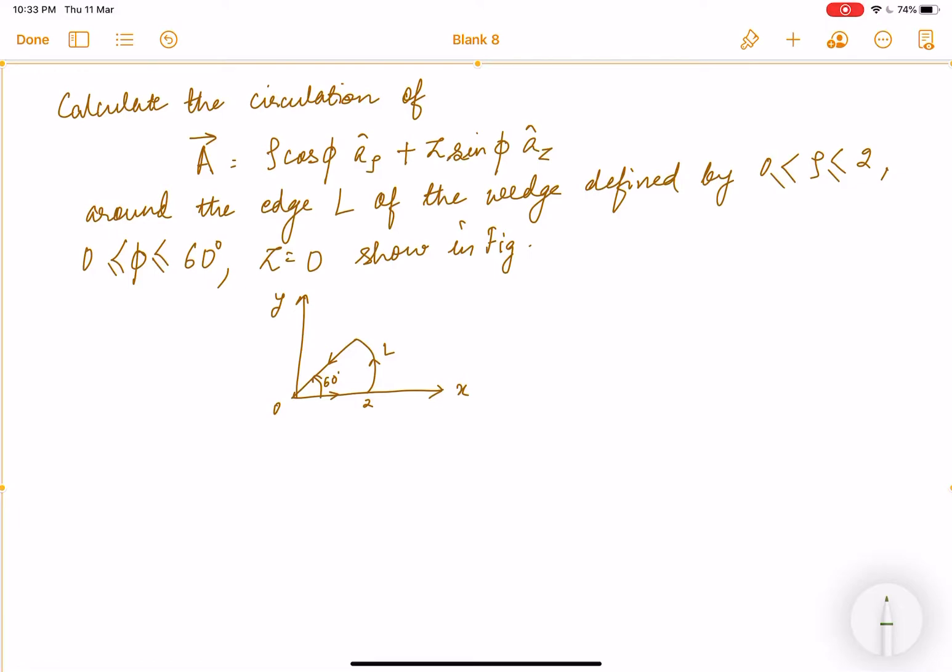0, as shown in the figure. What do we have to take out? We basically have to take out A dot dl. And what's this dl? dl is the wedge given in the picture. These are cylindrical coordinates that are given to us. The A vector is given totally